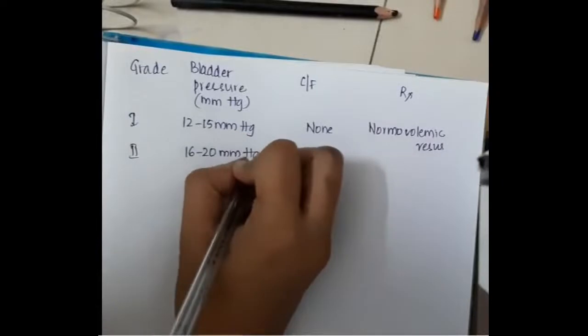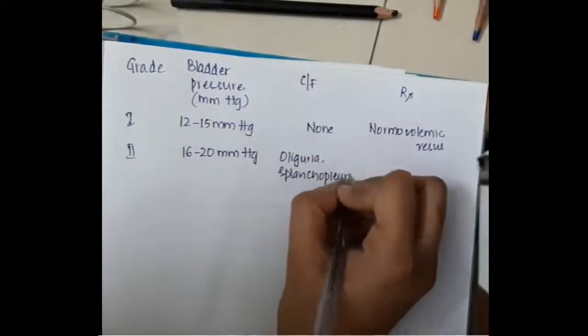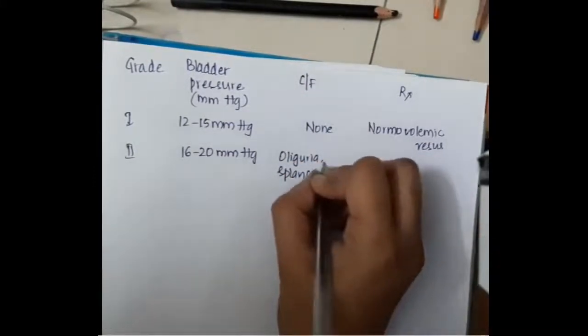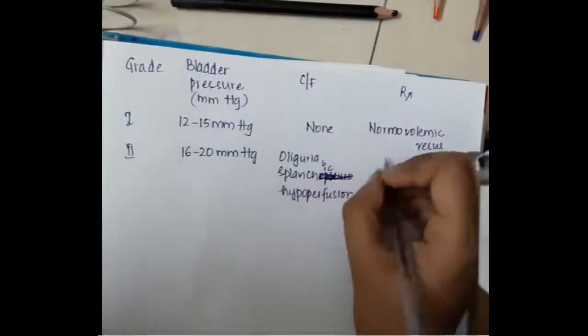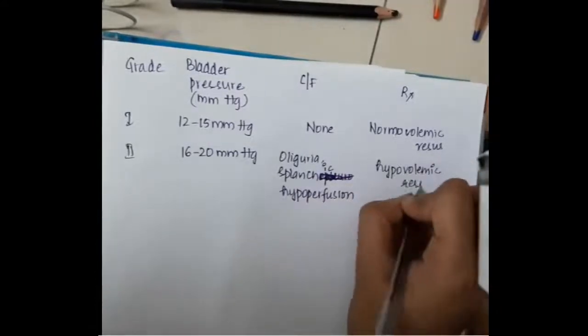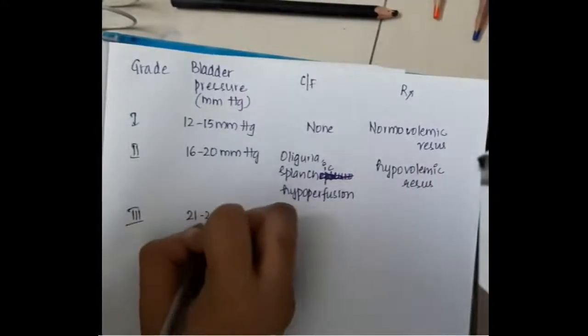In grade 2, if the bladder pressure is 16 to 20 millimeters of mercury and there is oliguria and splanchnic hypoperfusion, we give hypovolemic resuscitation.